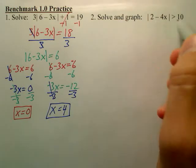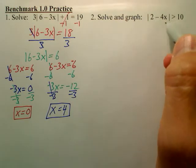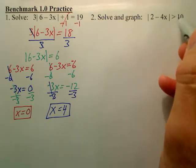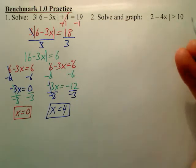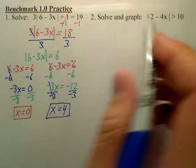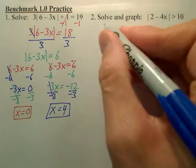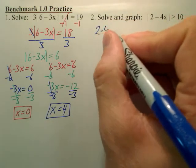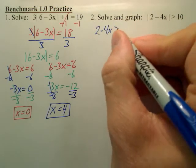Next, to solve this type, you have to first think if it's an and or an or. Since this is a greater than, it is an or. So we're going to do the same thing as we did over here. So the absolute value is by itself. So we're going to have 2 minus 4x. Leave it as normal.